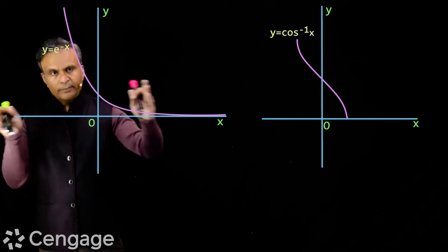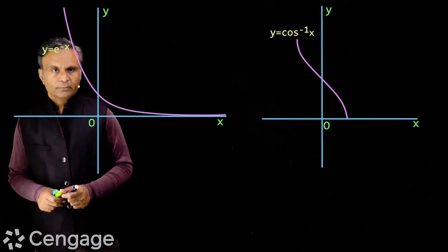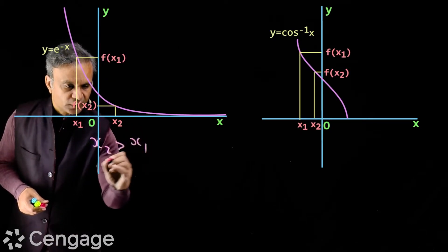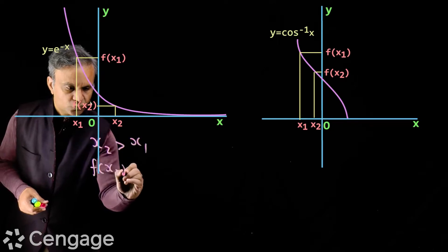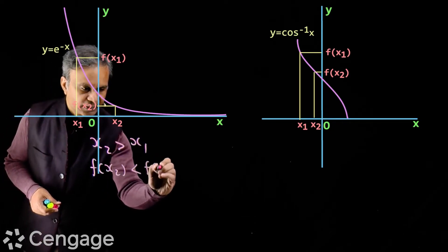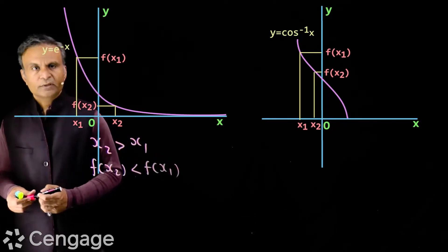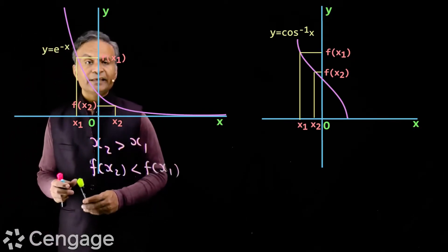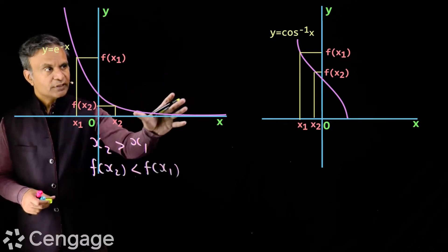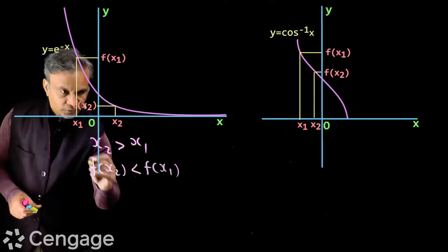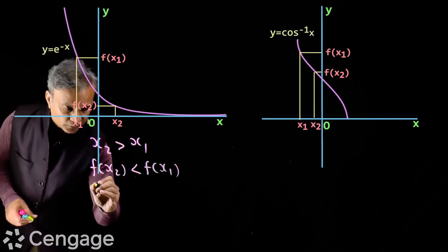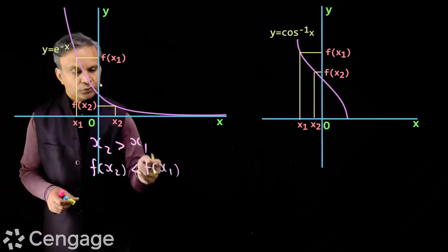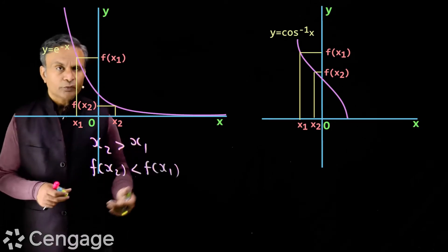The mathematical model for this is: if x2 is more than x1, then f(x2) will be less than f(x1). This is the definition of a strictly decreasing function. These two functions — e^(-x) and cos⁻¹x — are strictly decreasing functions.